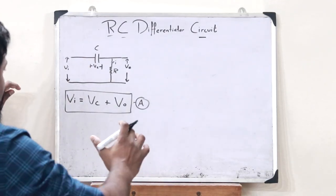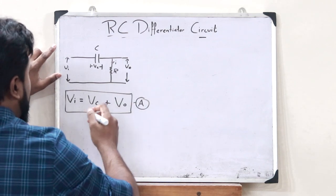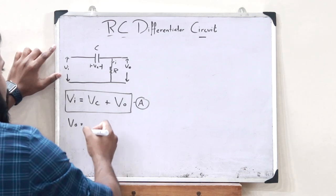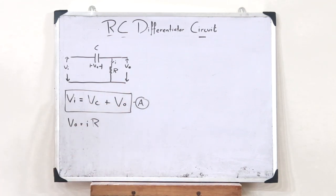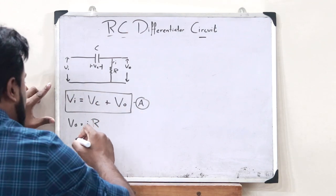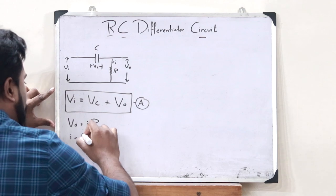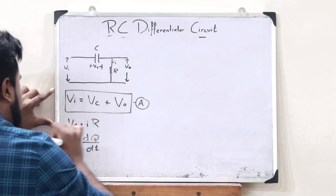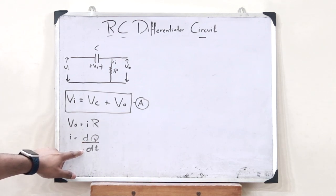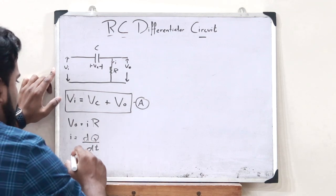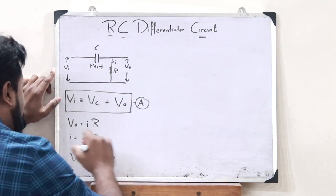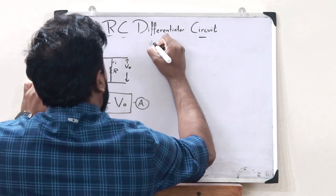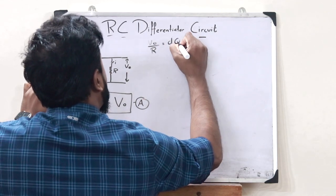Going back to the fundamental laws, let us consider Ohm's law. Across this resistor, V0 is equal to I times R. But we know that current I is equal to the rate of change of charge — that is, I equals dQ by dT. Substituting, V0 equals dQ by dT times R. Therefore this equation becomes V0 by R equals dQ by dT. Let us call this equation B.